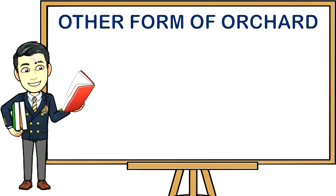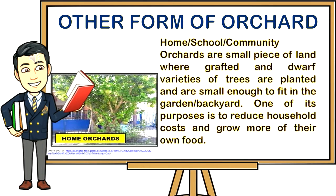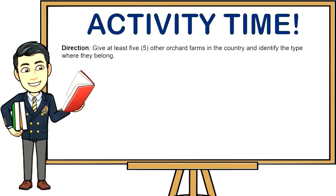Other forms of orchard — home or community orchards — are small pieces of land where grafted and dwarf varieties of trees are planted and are small enough to fit in the garden or backyard. One of its purposes is to reduce household costs and grow more of their own food.